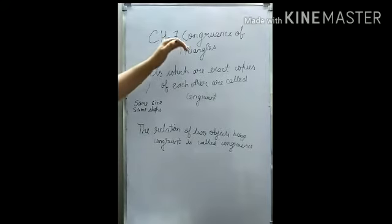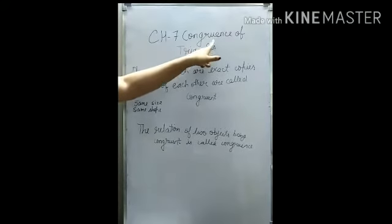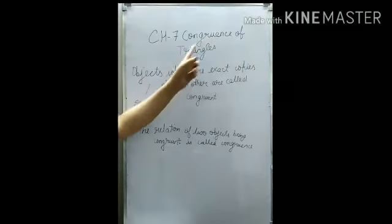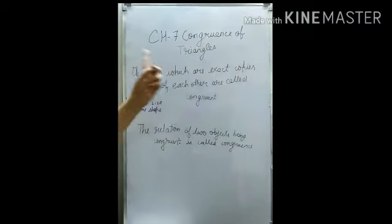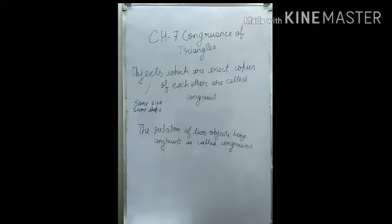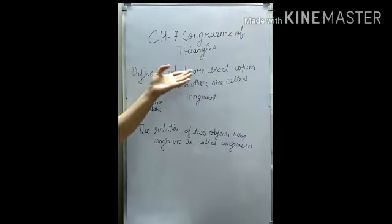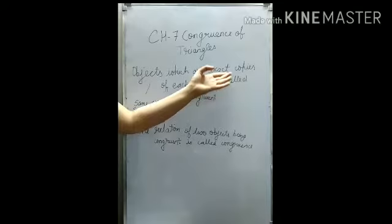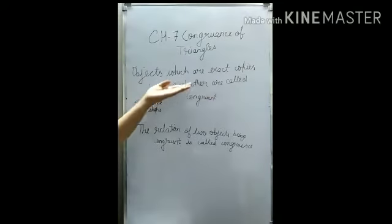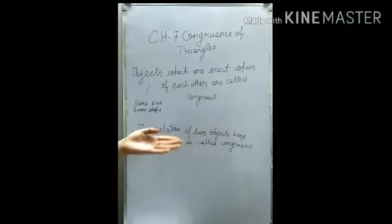First of all, we are going to study about congruency of triangles. What is congruency? What is congruent? These are new words for us, so first of all we are going to study the meaning. We say objects which are exact copies of each other are called congruent.